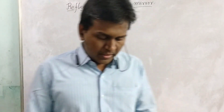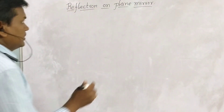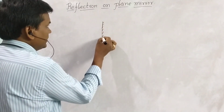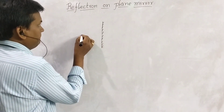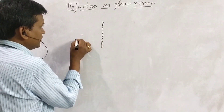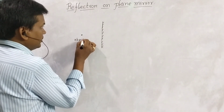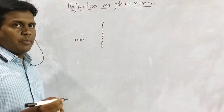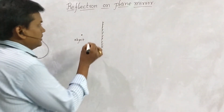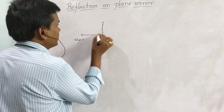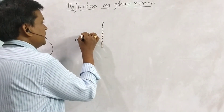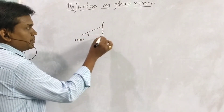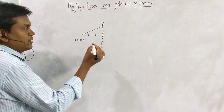Now, reflection on a plane mirror. Consider a plane mirror and a point object. To trace the image formed by the plane mirror, two rays are required. This is the first ray and this is the second ray. As this ray is passing through the normal, it will retrace its path.